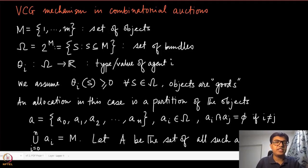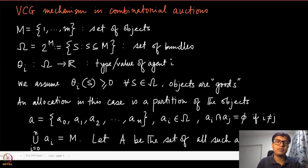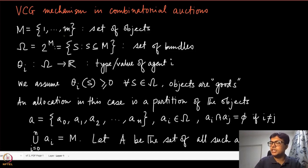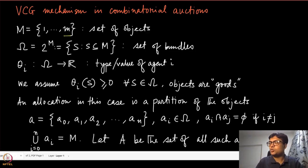Now that we know what a VCG mechanism is, let us discuss some of its properties in the context of combinatorial auctions. Just to remind you, a combinatorial auction is one where every agent has some valuation on a combination of objects. There are m indivisible objects, and every agent has a valuation for a subset of these objects. We denote by omega the set of all possible subsets of m, which is the power set of m.